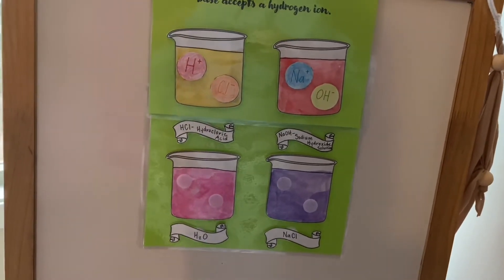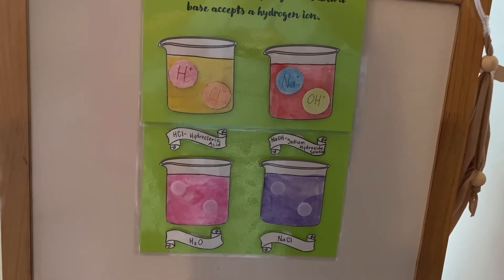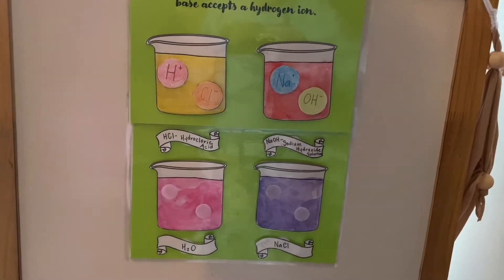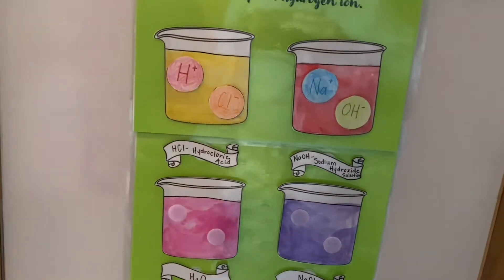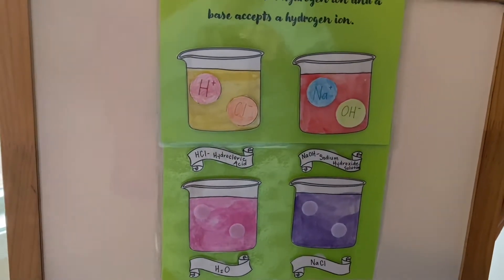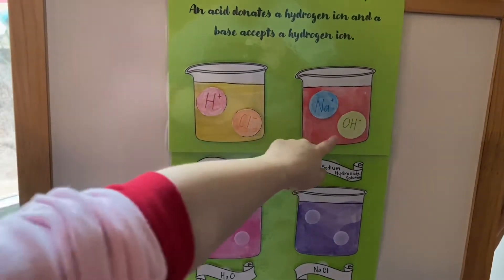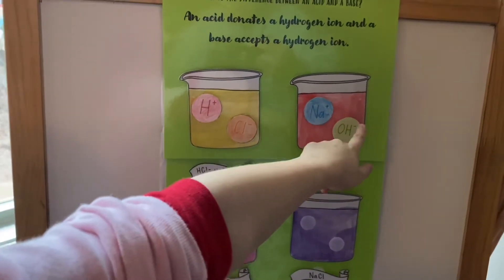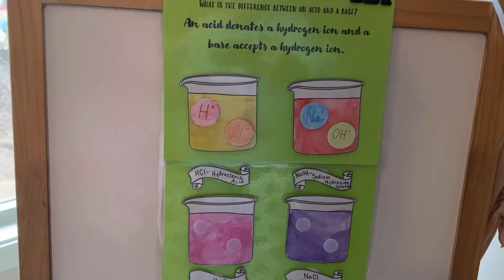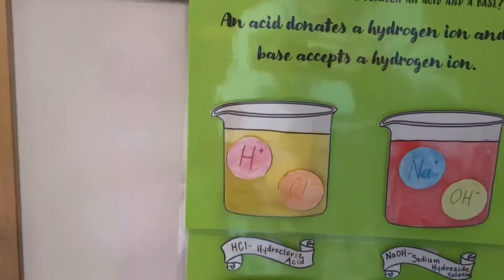Who can tell me — hint hint, that's you, my lovely assistant Hazel — what is the chemical symbol for hydrogen? H. That's very right! And can you point to me where the H's are?